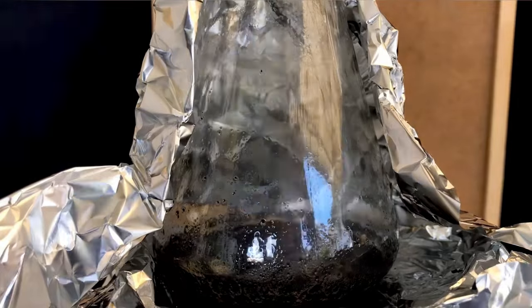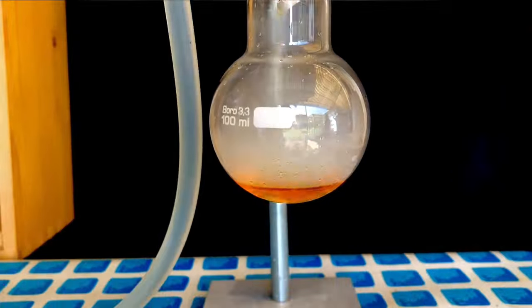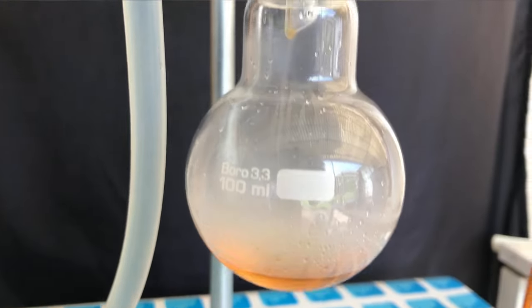Aluminum foil was still used to speed up the distillation, as I hate to wait. Only 20 minutes after the start of the distillation, everything had distilled over. The Bunsen burner was now turned off.